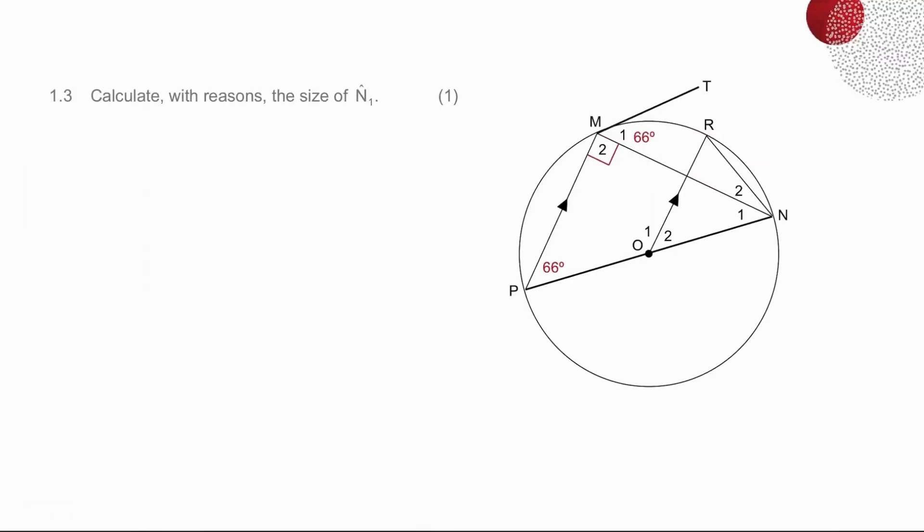In question 1.3, we have to find the size of angle N1. Now, angle N1 is on the edge of the circle, so we're not quite sure what our strategy needs to be. But we also need to think about everything we've done before. And regardless of the method that we end up using, it is often helpful to simply trace the sides of the angle so that you can get a better picture. And in doing that, I can see where the angle starts from,